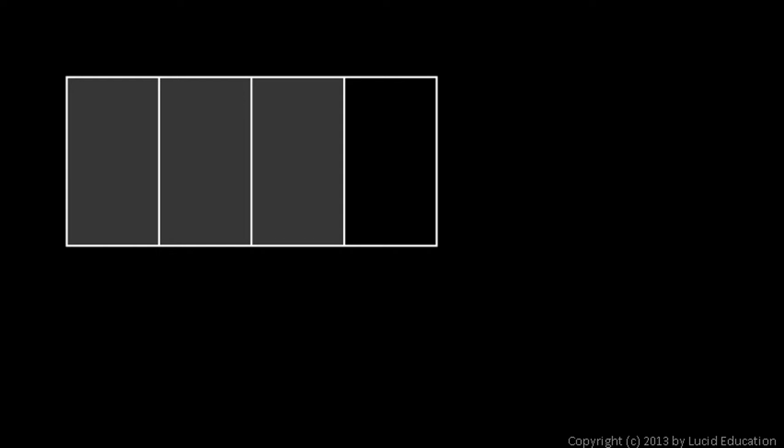Here's a rectangle. It's divided into four sections, and three of the sections are shaded, so the fraction that represents the shaded portion is, of course, 3 fourths. Okay, that's pretty easy.